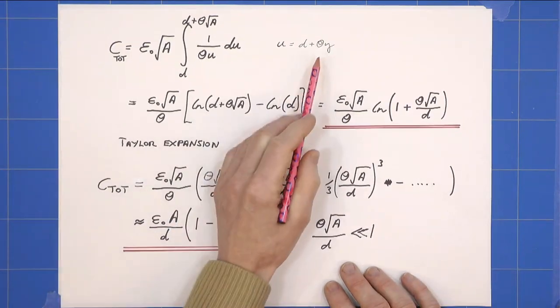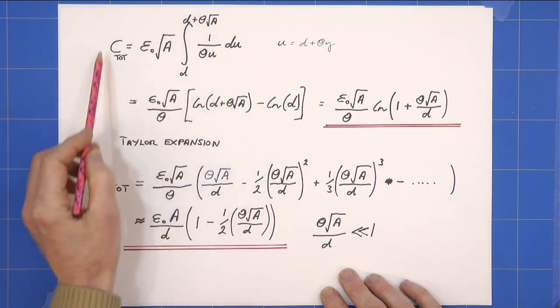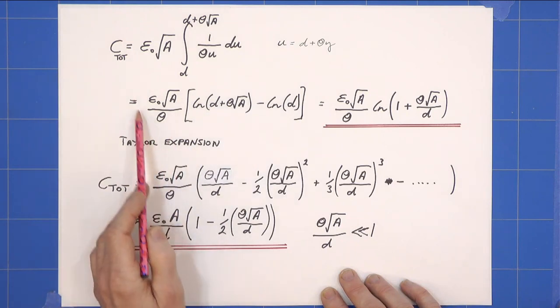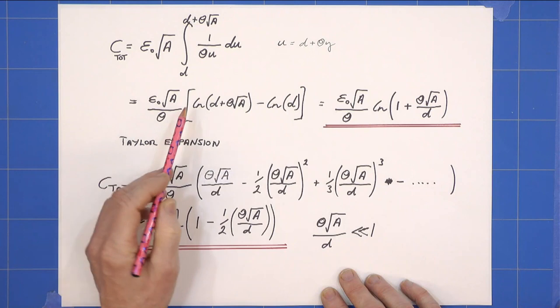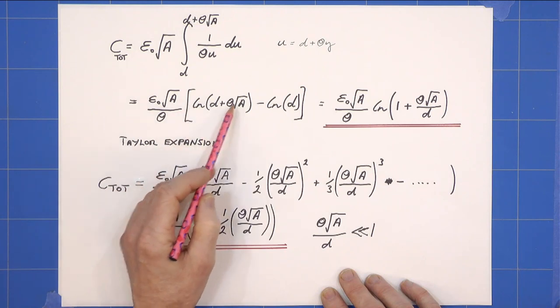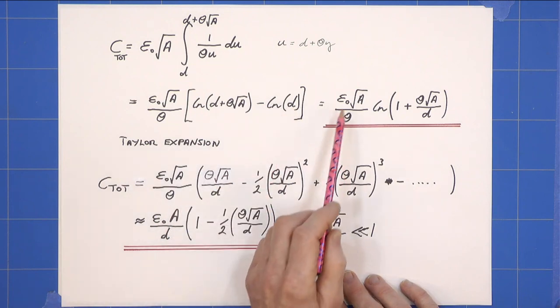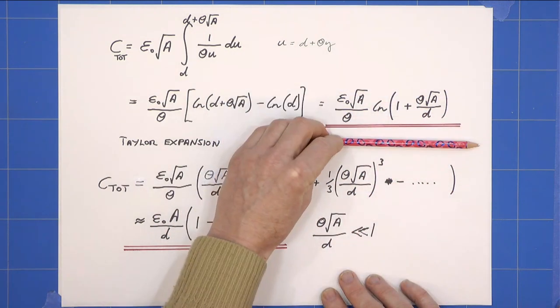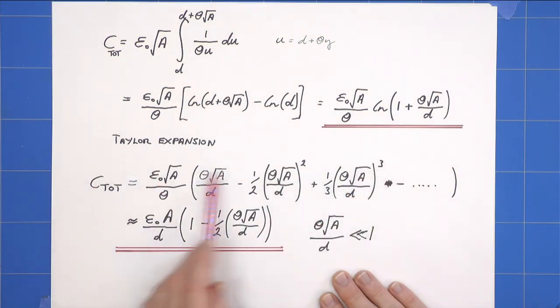So I'll do a quick U substitution. U equals D plus theta Y, and I get this here, which is a logarithmic integral, which gives us this result here: epsilon naught root A over theta, natural log of D plus theta root A minus natural log D, which becomes that. And that is our formula.